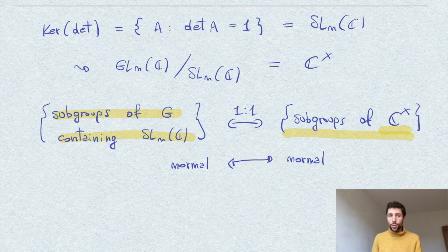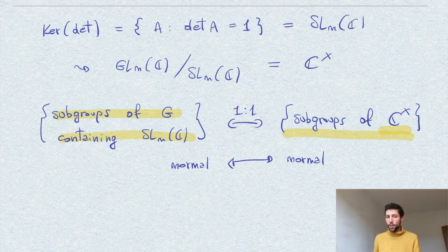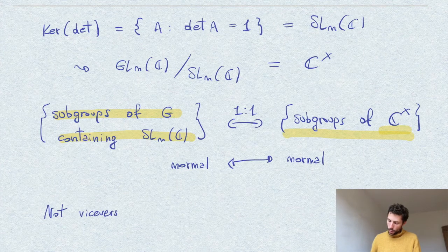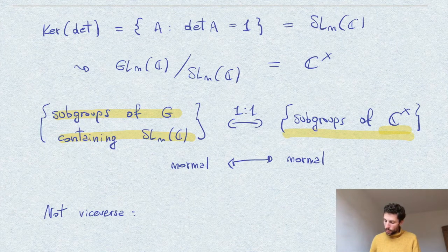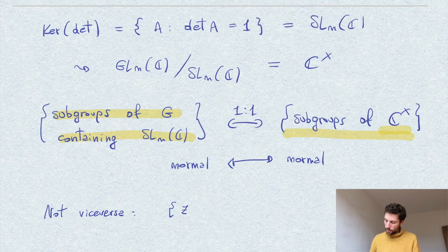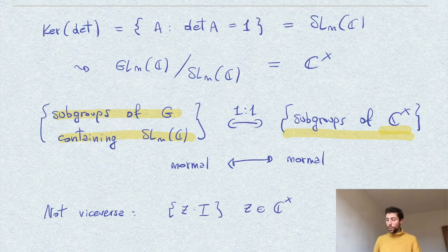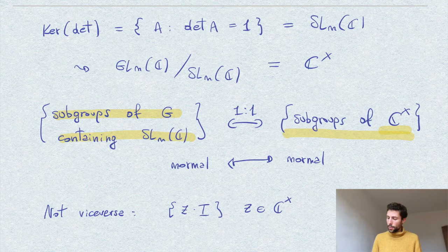Well, of course, there are many subgroups in GL_n(C) and it's not the case that all normal subgroups are of this form. So, for example, just to mention that the converse is not true in general, you can just consider the subgroup of scalar matrices of the form Z times the identity where Z is in C star. So, of course, this is a normal subgroup of GL_n since all these matrices commute with any other matrix, but it doesn't contain SL_n(C).